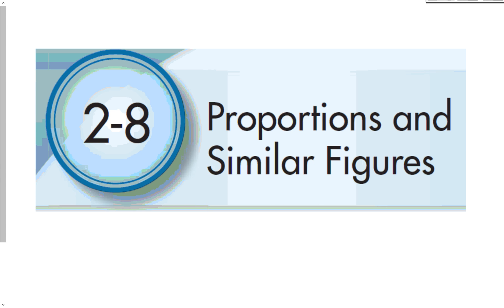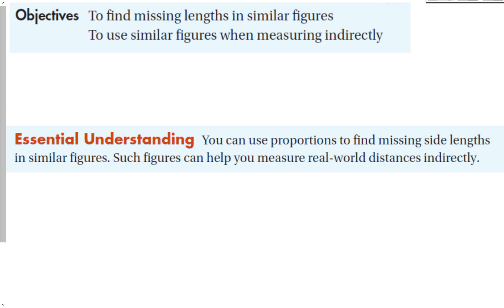Lesson 2-8: Proportions and Similar Figures. Our objective for this lesson is to find missing lengths in similar figures and to use similar figures when measuring indirectly. Our essential understanding is that we can use proportions to find missing side lengths in similar figures, which can help you measure real-world distances indirectly. We're taking what we did last section with proportions and introducing the concept of similarity. You will use this very often next year in geometry.